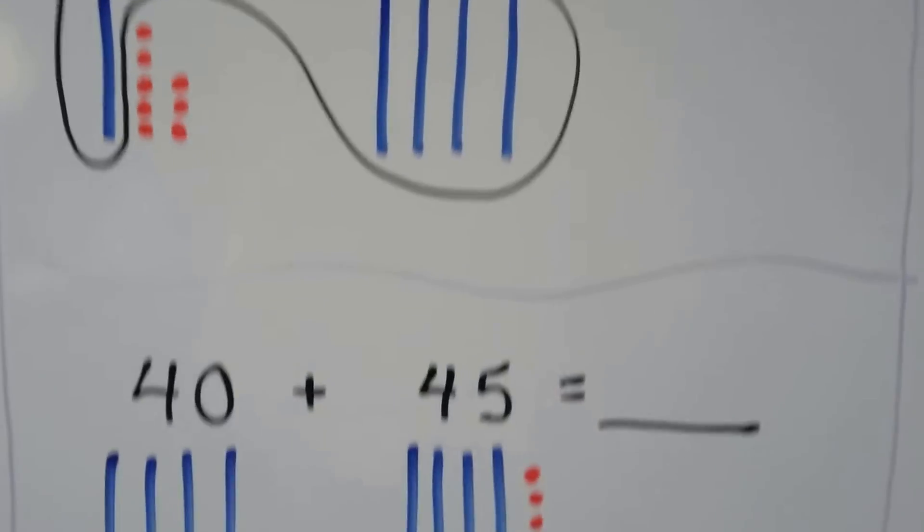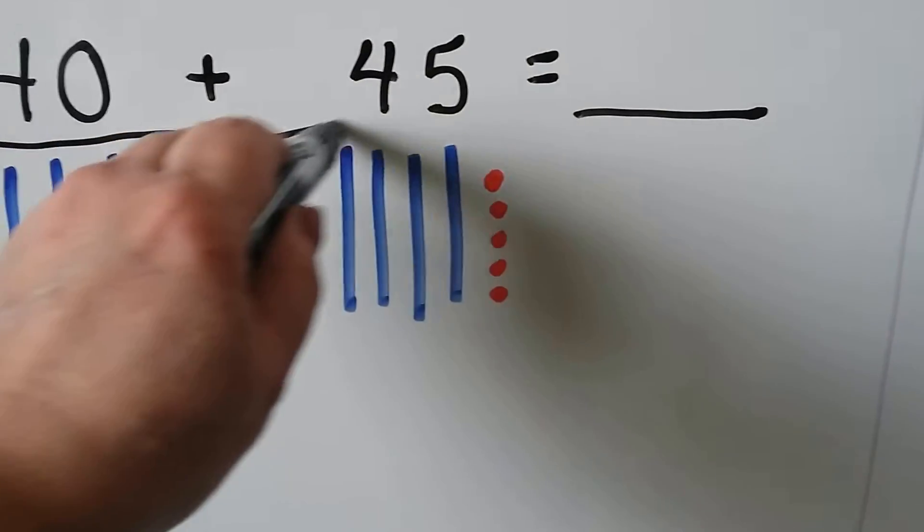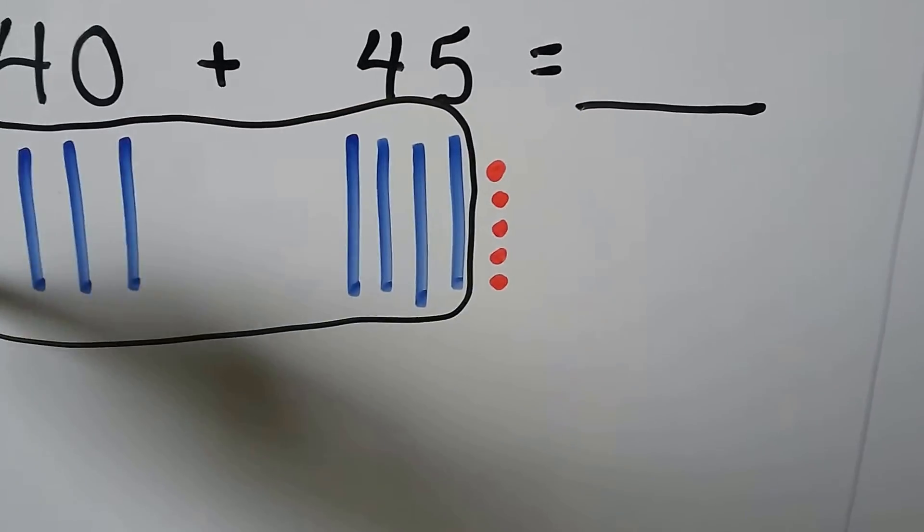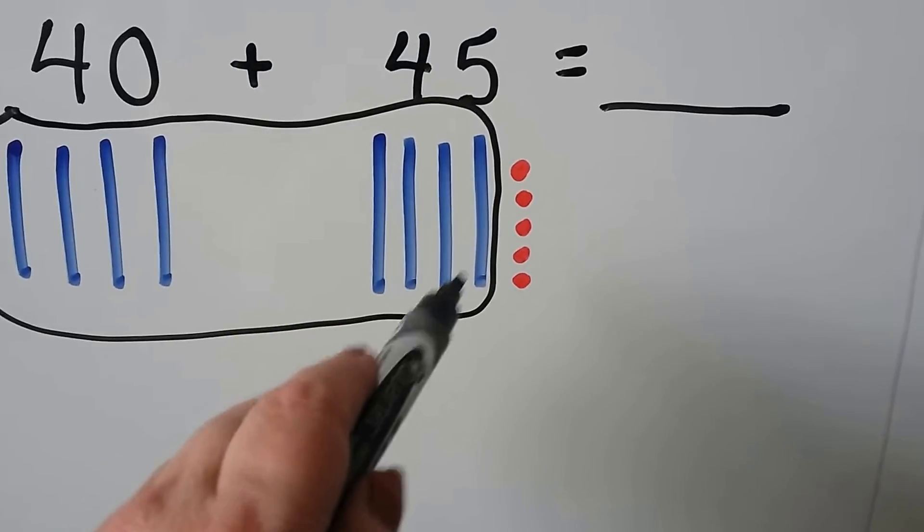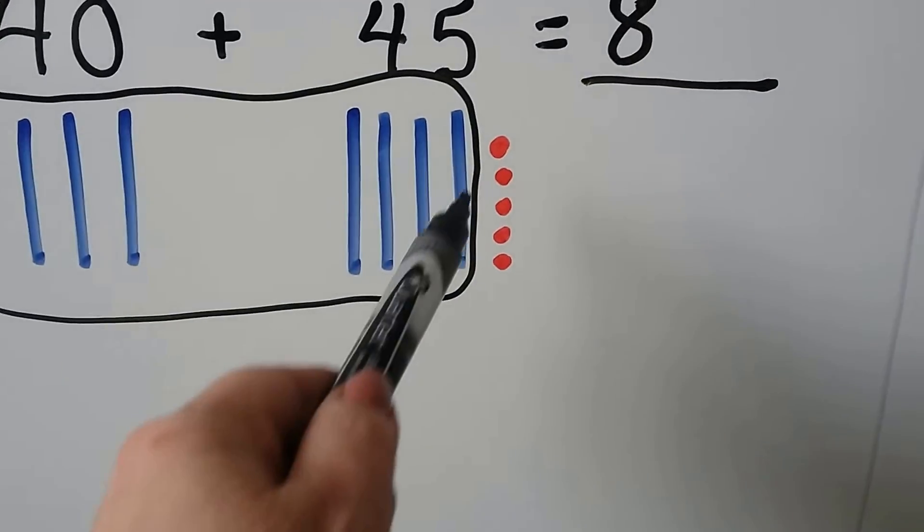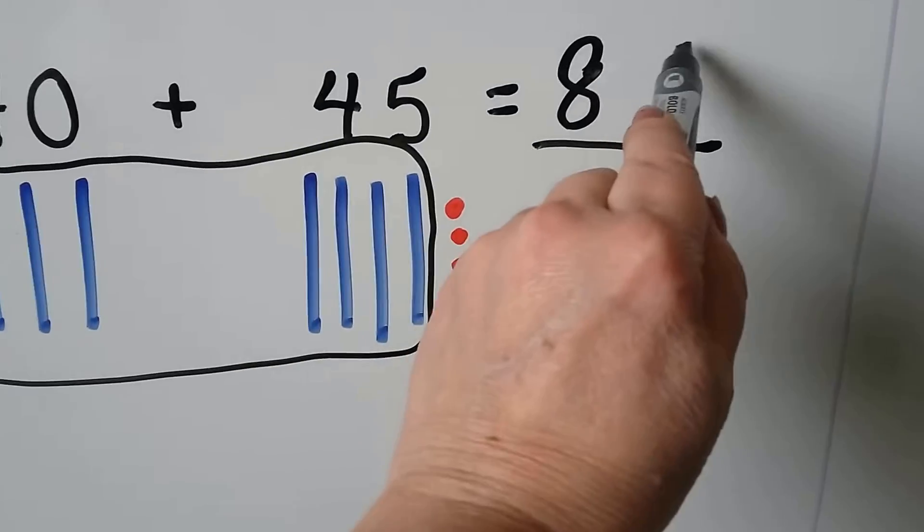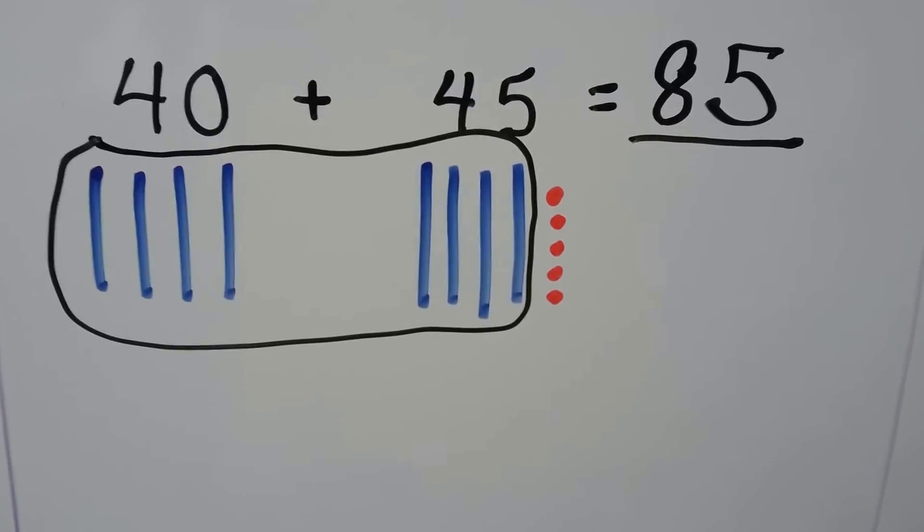Let's try it again. We have 40 plus 45. We can group the 4 tens and the 4 tens together. We have 4, 5, 6, 7, 8 tens. We have the 5 ones. 40 plus 45 is equal to 85.